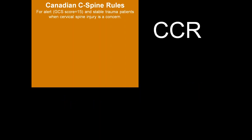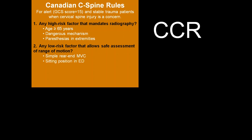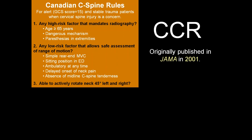The Canadian C-spine rule also applies to alert adult patients with a GCS of 15. It's a three-step rule. Step one: are there any high-risk factors that mandate radiography? These include age 65 or greater, a dangerous mechanism of injury, or paresthesias in the upper extremities. If none are present, proceed to step two: are there low-risk factors allowing safe range-of-motion assessment? These include a simple rear-end MVC, being seated in the ED, ambulatory at any time, delayed onset of neck pain, or absence of midline cervical spine tenderness. If those are met, step three is to ask the patient to actively rotate their head 45 degrees left and right — if they can, no imaging is necessary.